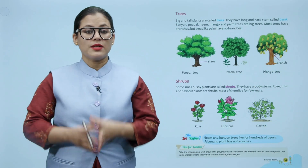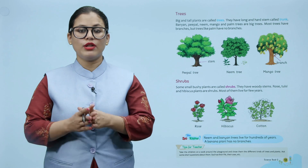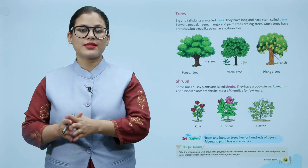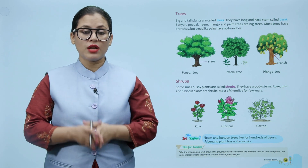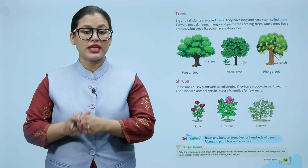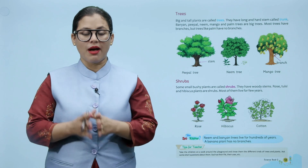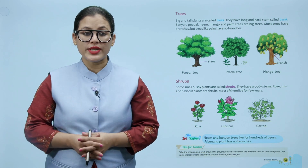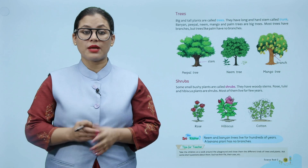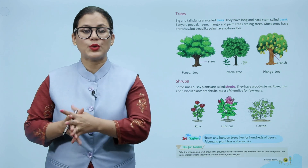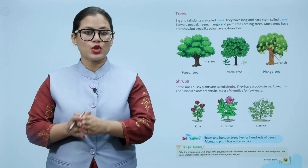Trees: Big and tall plants are called trees. They have a long and hard stem called trunk. Banyan, peepal, mango, and palm trees are big trees. Most trees have branches, but trees like palm have no branches.